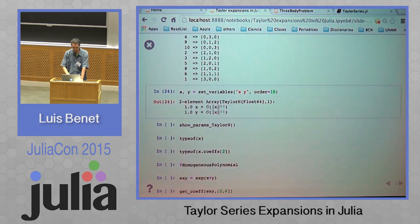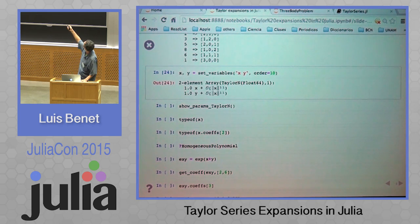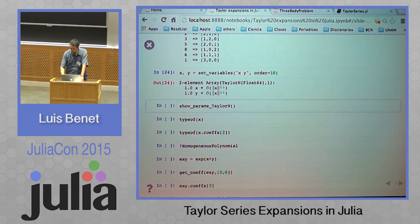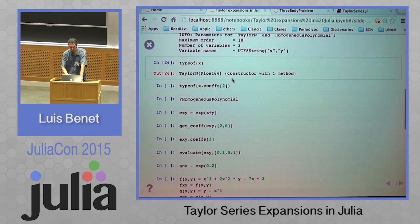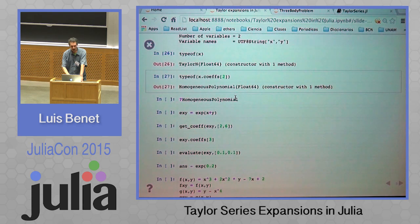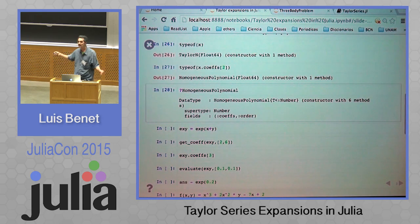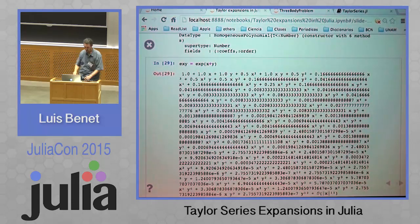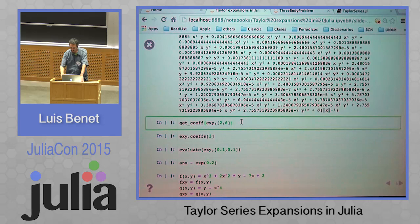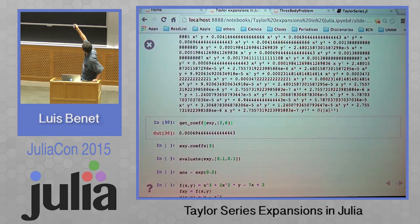Let me play with some variables. Let me define only two variables and order 10 in my expansions. This is the contents — the parameters we will be dealing with. This is the type of whatever I just defined. The coefficients are homogeneous polynomials. An homogeneous polynomial is a set of coefficients of a given order arranged in this dictionary way. You can do some basic functions, like the exponential. You can get the coefficient for, say, x raised to the power 2 and y raised to the power 6, and you will get this number.